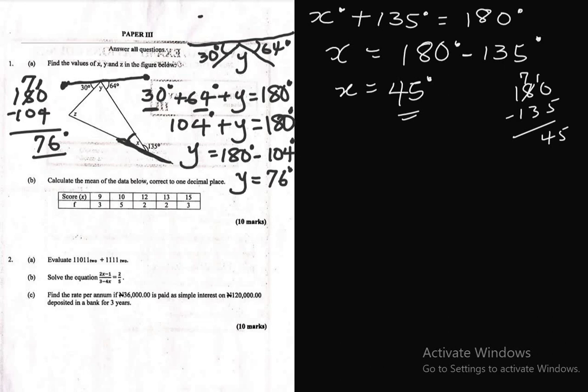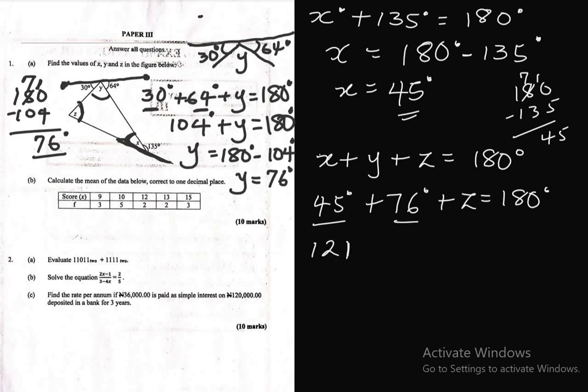That's 45 degrees. Now we can solve this together: 180 minus 135, borrow one from 8, 8 reduces to 7, put the one here, 10 minus 5 is 5, 7 minus 3 is 4, that's 45 degrees. Now we have x and y. Next is to find the value of the last angle here which is z. The sum of the interior angles of a triangle is 180. So this angle x plus angle z plus angle y must give you 180. We know that x is 45 degrees and y we solved and got 76 degrees.